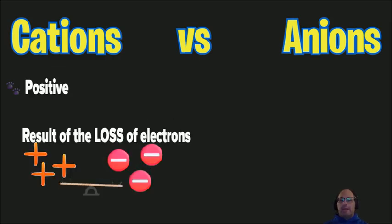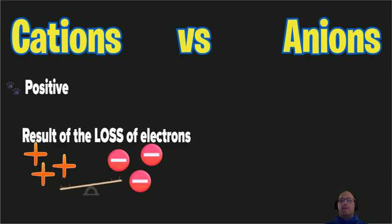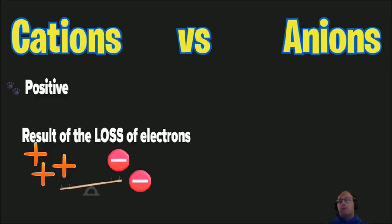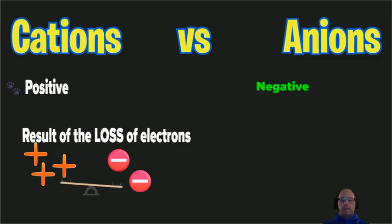Normally in atoms we have the same number of protons in the nucleus as we have electrons on the outside. So when we take away those electrons, we now have one more positive charge than we have negative charge around that atom, so the overall charge on that atom would be positive. That makes it a cation because we have lost electrons.